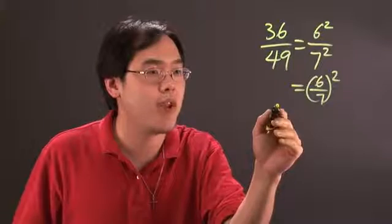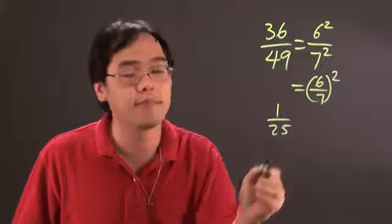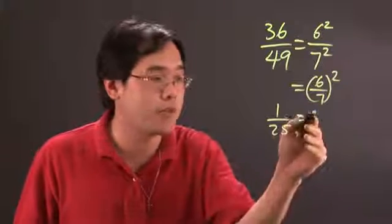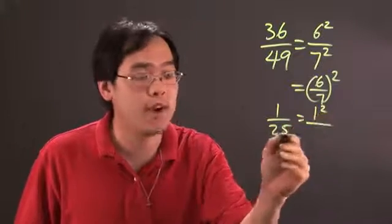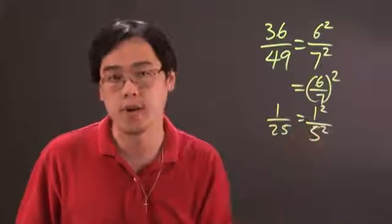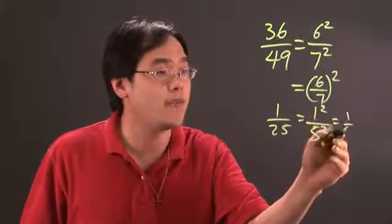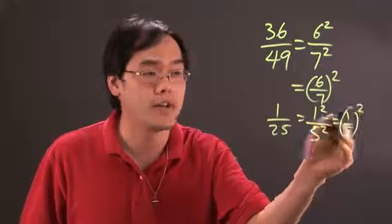Another illustration for you is if you have 1 over 25, 1 is a perfect square because it's 1 squared. 25 is a perfect square because it's 5 squared. So this can be rewritten as 1 over 5 quantity squared.